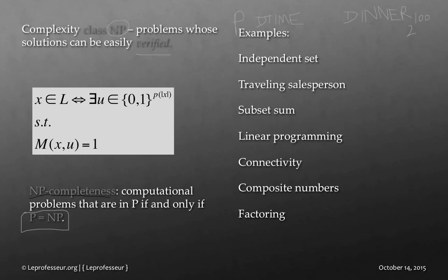Scientists have found solutions to some problems, while some problems are still unsolved. The relationship between P and NP is that P is basically a subset of NP, since for any problem in P we can also verify its solution.